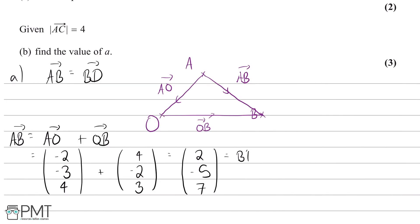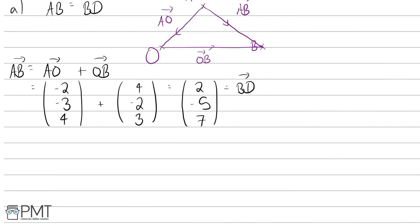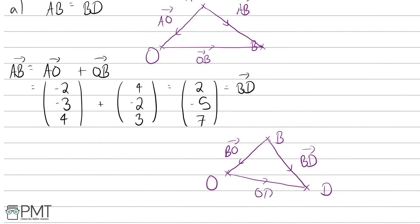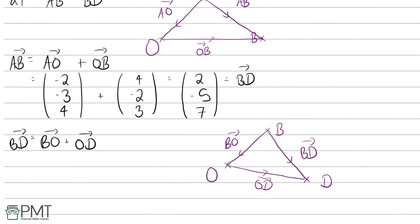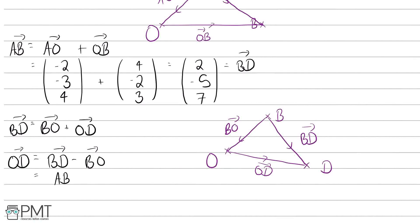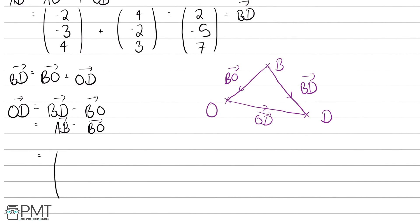We know AB is the same as BD, and now we need to work out the position vector of D. Using a similar diagram: there's O, there's B, there's D. Going from B to D is the same as going from B to O and then O to D. So BD equals BO plus OD, which rearranges to OD equals BD minus BO. And since BD equals AB, we can substitute that in. So OD equals AB minus BO.